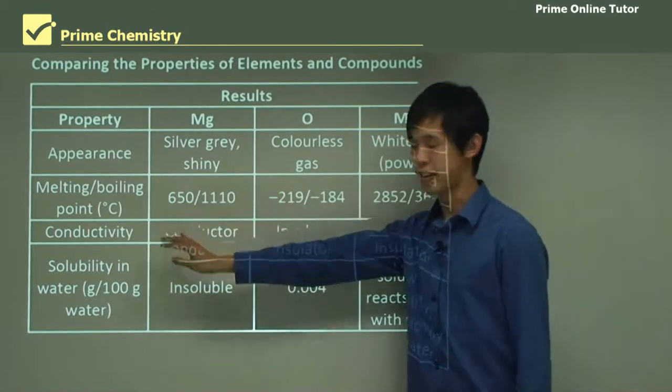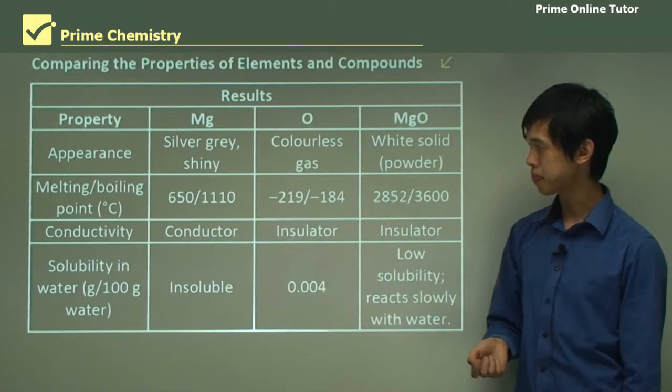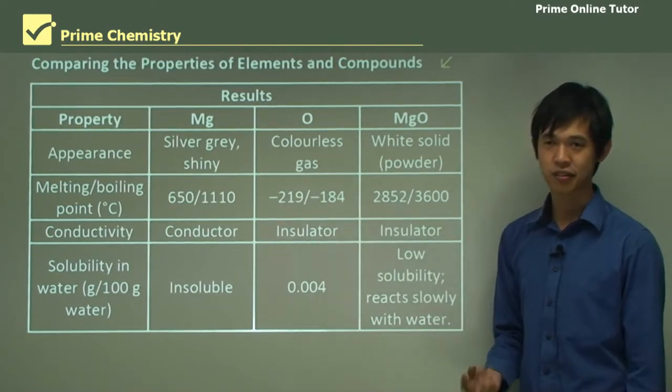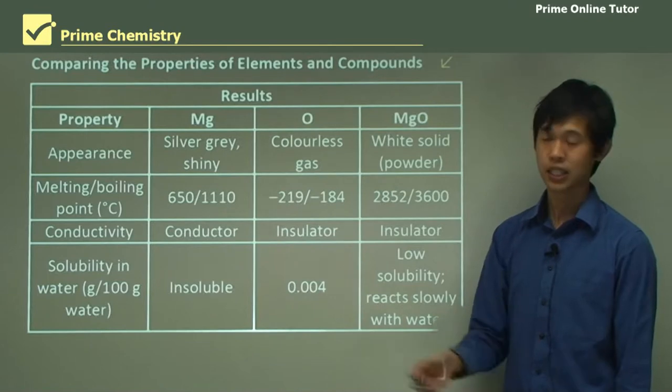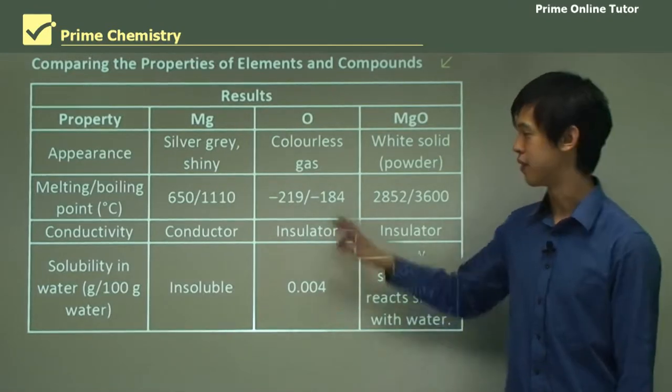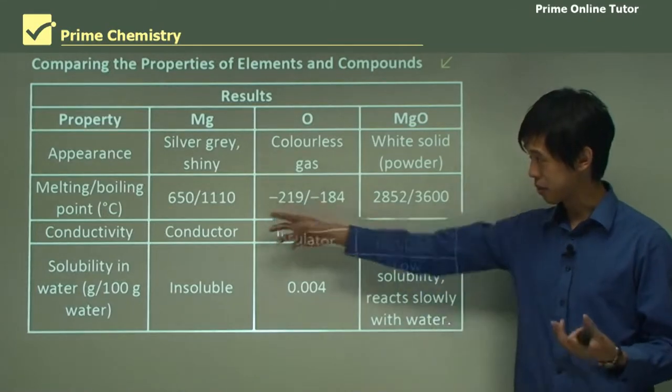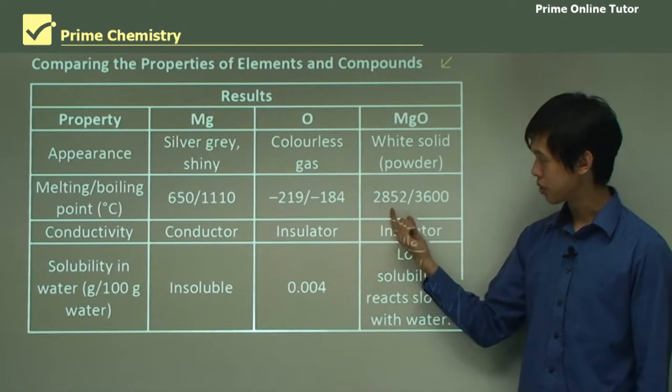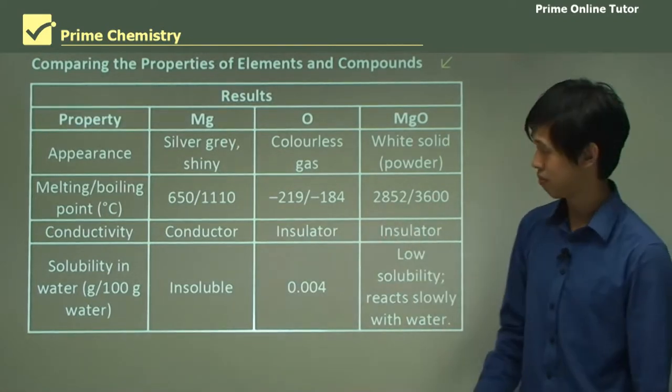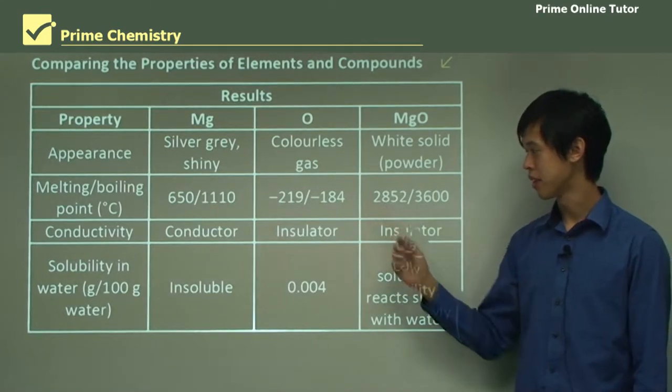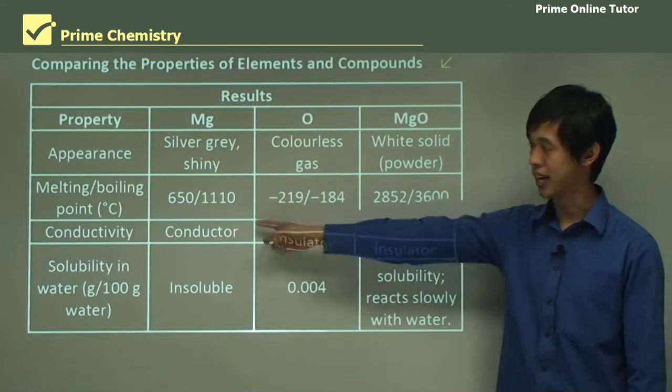Now the melting point of magnesium is very high. It's 650 degrees for melting and 1,110 for boiling. Now if we look at oxygen, obviously because it's a gas at room temperature, its boiling and melting point are very low. Its boiling point is negative 184 degrees. So in order just to get it to liquid, we need to cool it to negative 184 degrees Celsius. But when we combine the two, it's boiling point's about three times as much and its melting point is about five times as much.